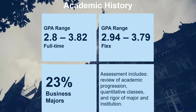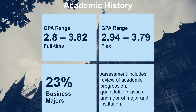Your GPA is not evaluated in isolation — we're looking at the course load you took each semester, your major, the types of classes, and other demands on your time. If you were working full-time while completing your undergraduate or heavily involved in extracurriculars, definitely let us know. If you had a tough semester or your GPA isn't where you want it to be, include an explanation in your optional essay. The optional essay is a chance to share what was happening in your life that impacted academic performance and show how you've learned and grown from that experience.